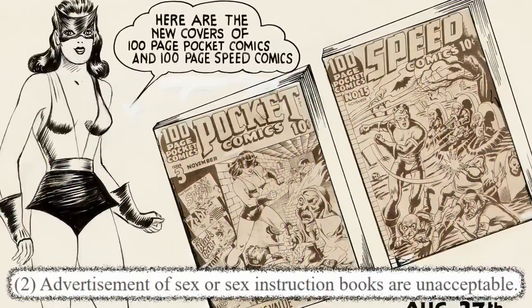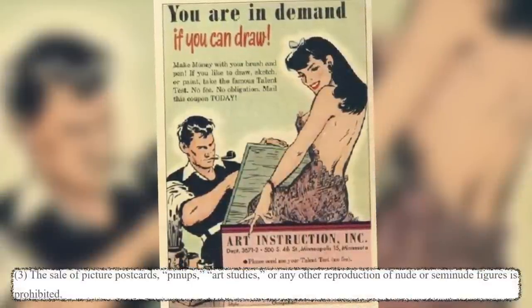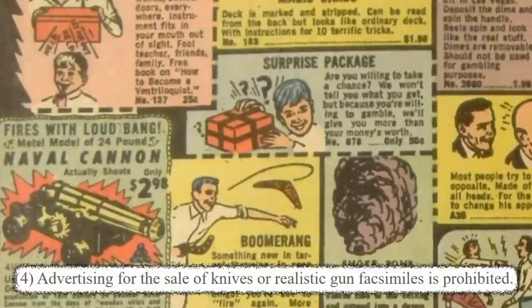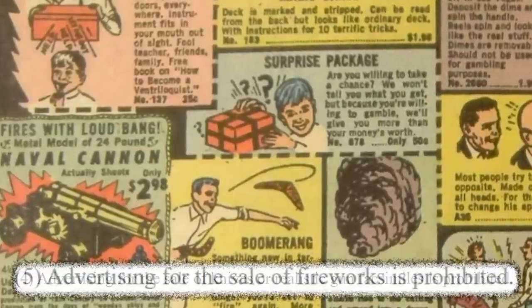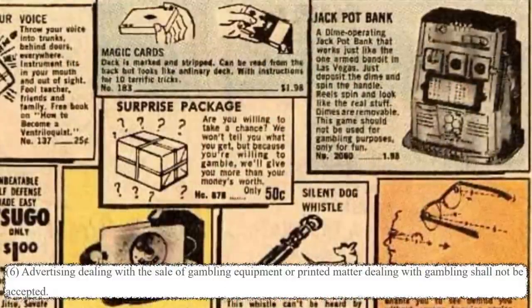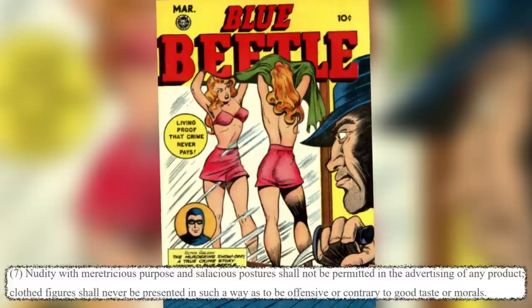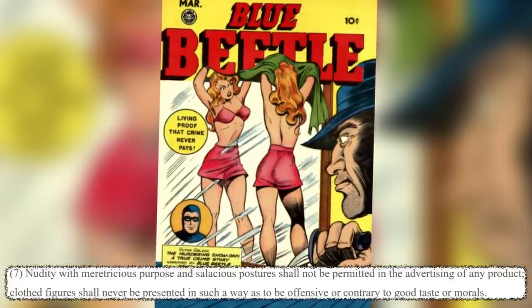Advertising rules: one — liquor and tobacco advertising is not acceptable. Two — advertising of sex or sex instruction books is unacceptable. Three — the sale of picture postcards, pinups, art studies, or any other reproduction of nude or semi-nude figures is prohibited. Four — advertising for the sale of knives or realistic gun facsimiles is prohibited. Five — advertising for the sale of fireworks is prohibited. Six — advertising dealing with the sale of gambling equipment or printed matter dealing with gambling shall not be accepted. Seven — nudity with salacious purpose and salacious posture shall not be permitted in the advertising of any product.